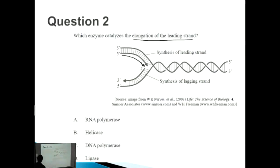RNA polymerase? No, because we're not talking about RNA, we're talking about DNA replication. Helicase? Well, helicase is the enzyme that actually does the unwinding, it breaks the helix apart. That's not actually what causes the elongation of a leading strand.